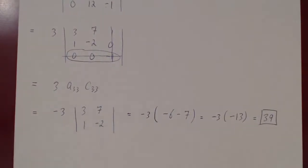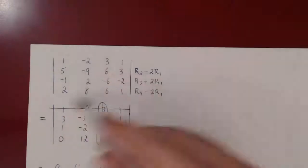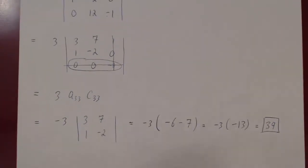The same idea applies for a 5x5 or 6x6 matrix — get a row or column where all entries are 0 but one, compute one cofactor, and the matrix drops down in size each step. As far as computations go, this is really the end of the story. Determinants do have other properties, but proving them would require about a month of new ideas.